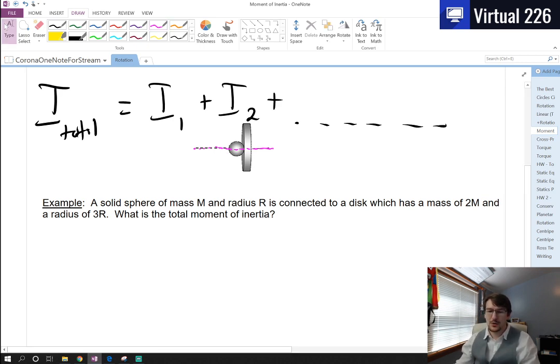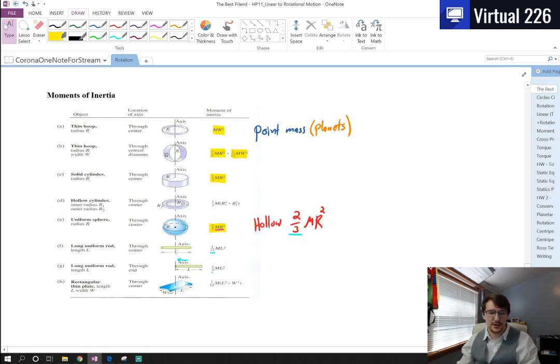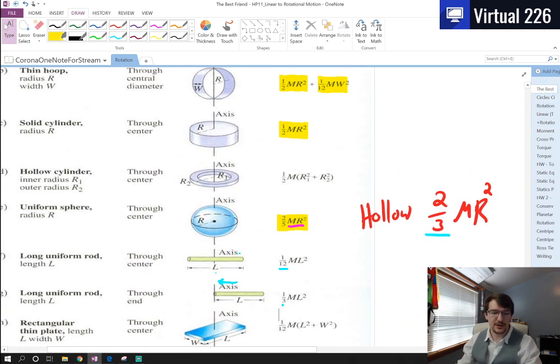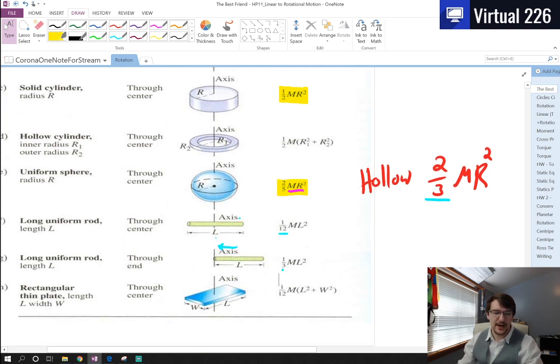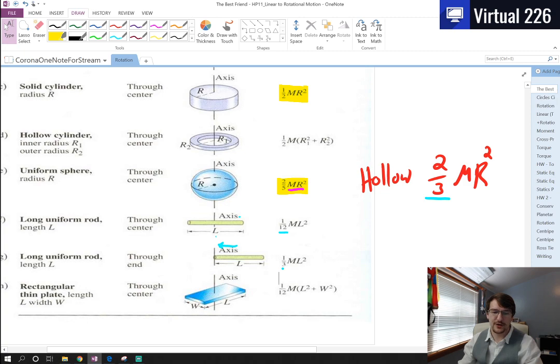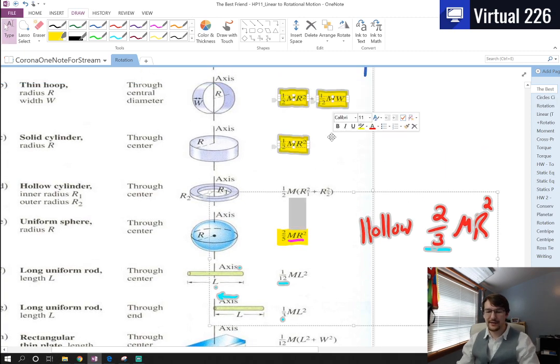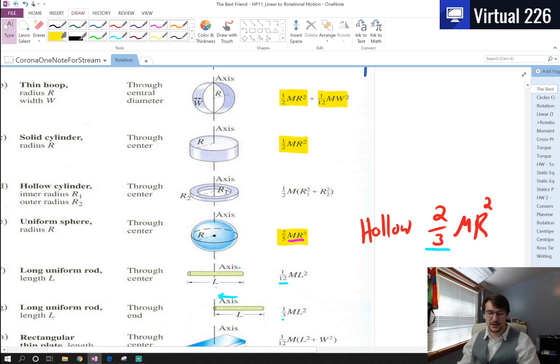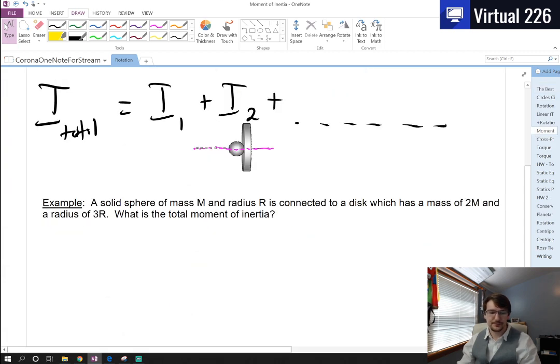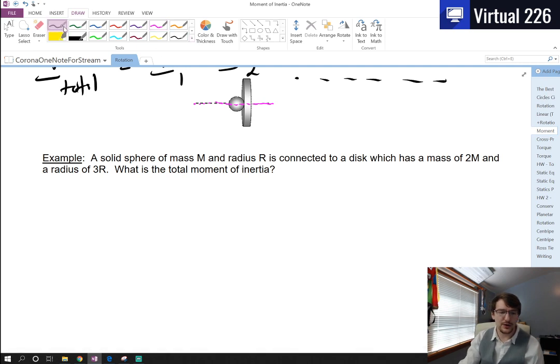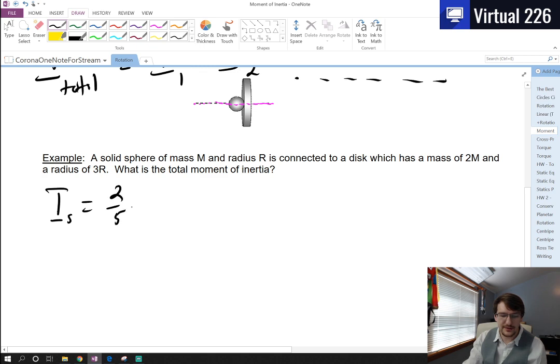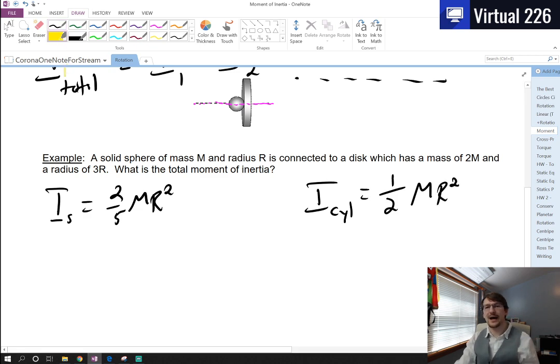For this, our sphere is rotating through the center and our disk is rotating through the center. When we look at our chart, for our cylinder that is rotating through the center, and our uniform sphere is rotating through the center as well, we're going to have one-half MR² and two-fifths MR² added together. The moment of our sphere is two-fifths MR² and the moment of inertia for our cylinder is one-half MR².